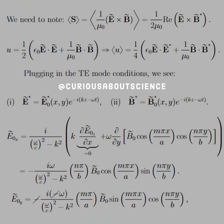Alright, so let's start with the pointing vector. It's one over mu with the E cross B.